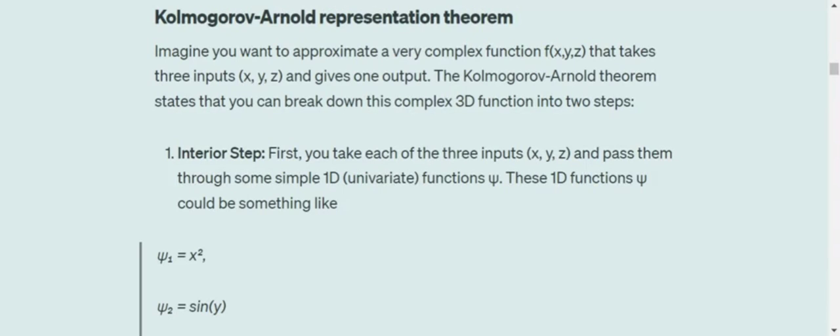That intakes three inputs and gives you one output. The theorem states that such a complex function can be broken down into a combination of 1D functions. By 1D, we mean univariate functions. This is particularly a 3D function, that means it takes three input variables. So the first step would be, we will be taking each of the three inputs x, y, z and pass them through some simple 1D function,